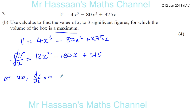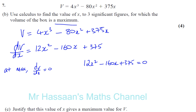At a maximum or minimum, the gradient function equals zero. So we set 12X squared minus 160X plus 375 equal to zero. The question says to use calculus, meaning differentiation. To solve this equation there are no obvious common factors, so we use the quadratic formula. Factorizing would be a tall order here, so the quadratic formula is the best approach.